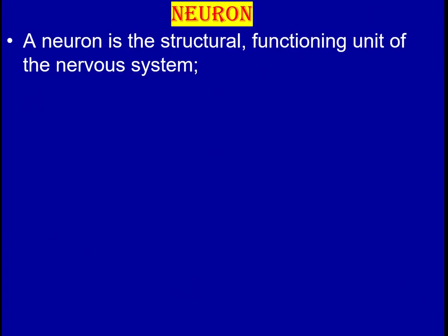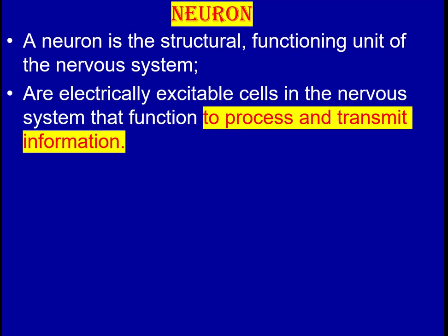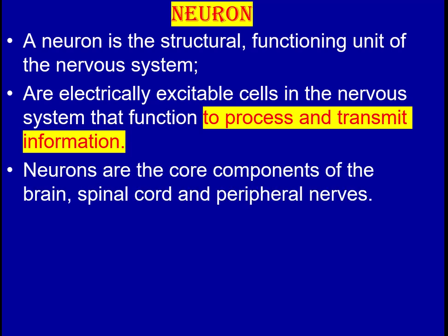A neuron is the structural and functional unit of the nervous system — an electrically excitable cell that functions to process and transmit information. Neurons are the core component of the brain, spinal cord, and peripheral nervous system. The whole nervous system is made of neurons, which is why the neuron is called the functional and structural unit of the nervous system.